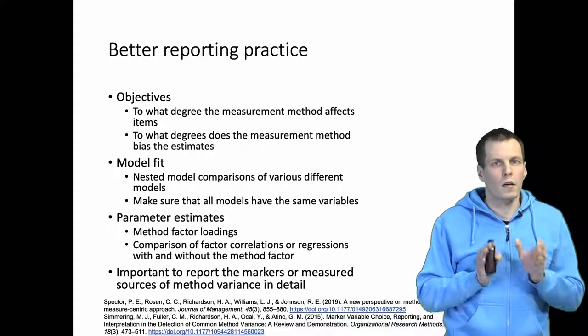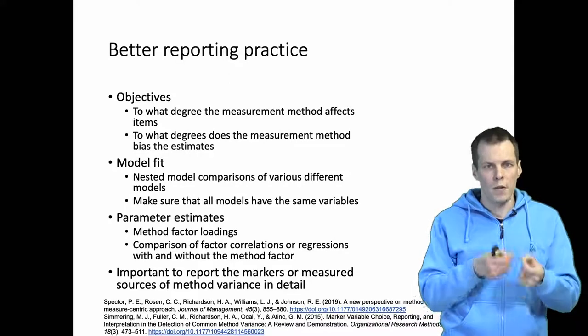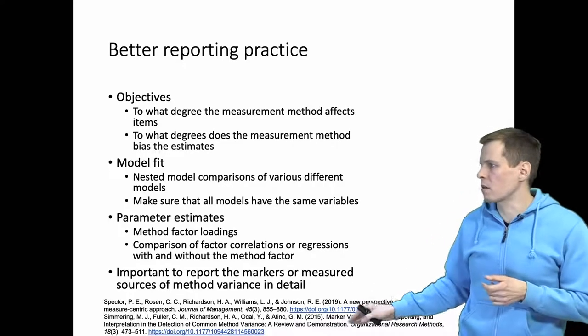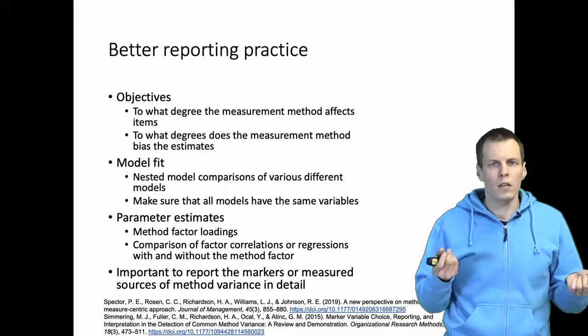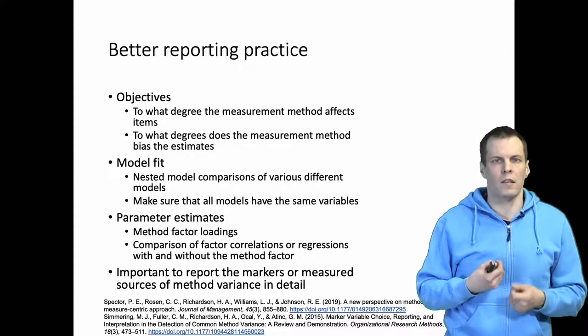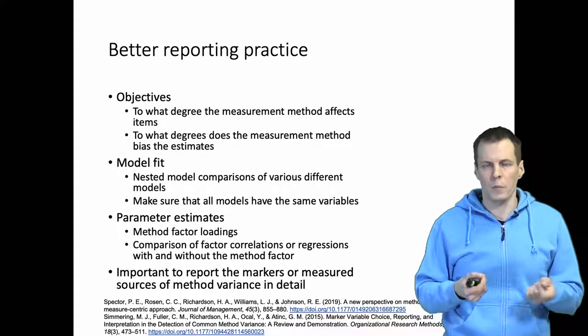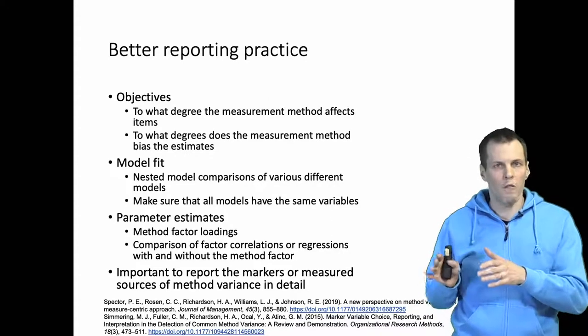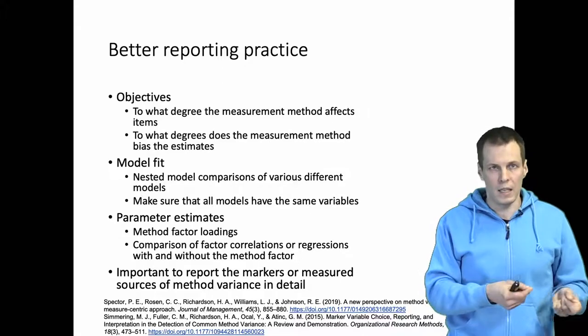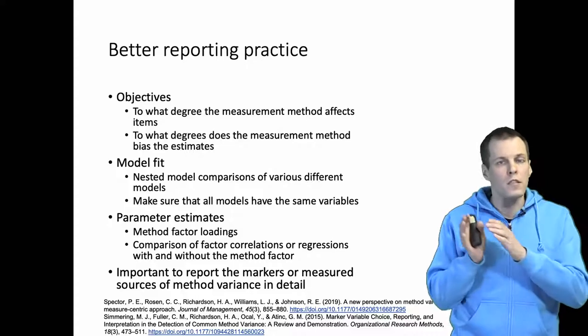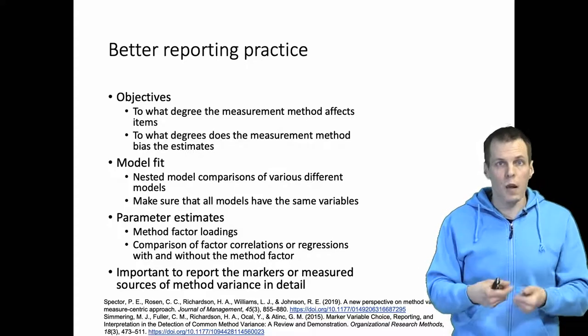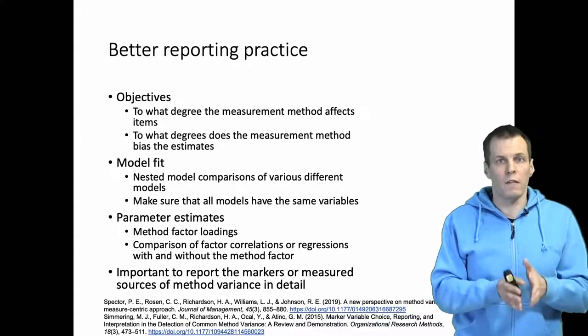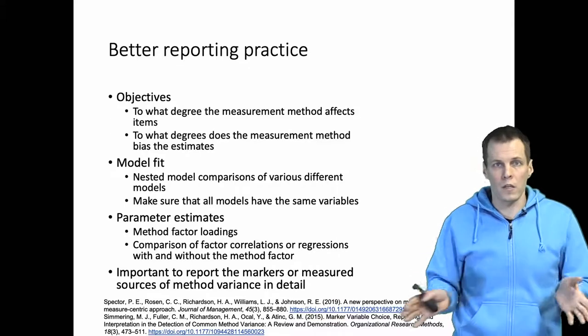Important to report the marker variables or measures of method variance in detail and this is important because generally as Simmering's article here points out, we don't know much about markers so people use markers but we don't have much evidence they actually work so we don't know how well they capture different sources of method variance. One reason for this is that these marker variables tend to be not reported in as much detail as the interesting variables. Like control variables these markers should always be reported with the same level of rigor and same level of explanation and justification that you give for the main study variables. There is no excuse for not reporting them.